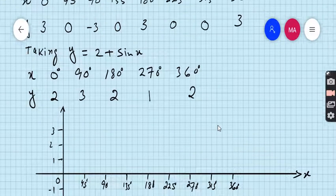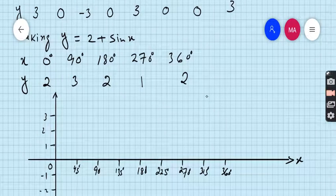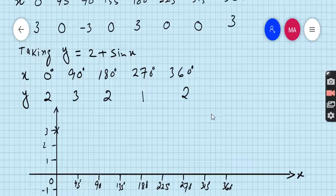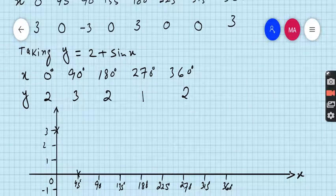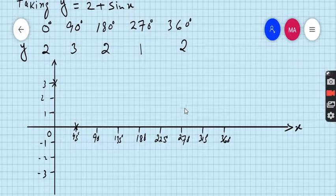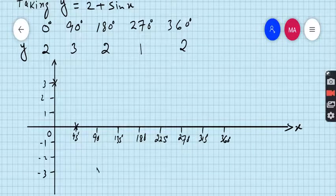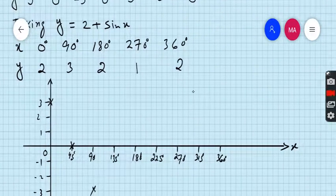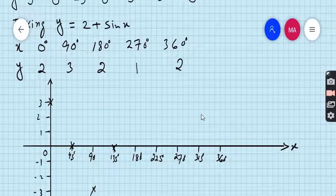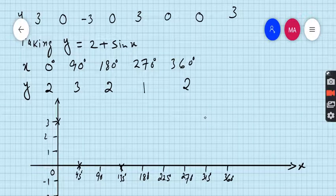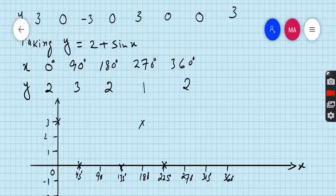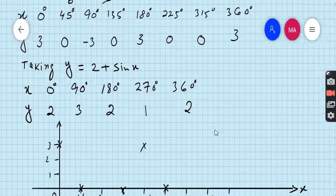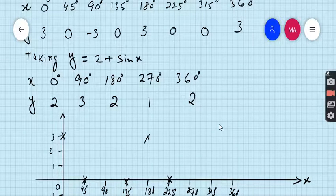First, we have to plot the values of first table, that is x is 0, then y is 3, when x is 0, then y is 3. Second, at 45, the value is 0, at 45, the value is 0, at 90, the value is minus 3. At 135, the value is 0, at 180, the value is 3. At 225, the value is 0, at 270, the value is also 0, but I want to check, 225 is 0, and 315.